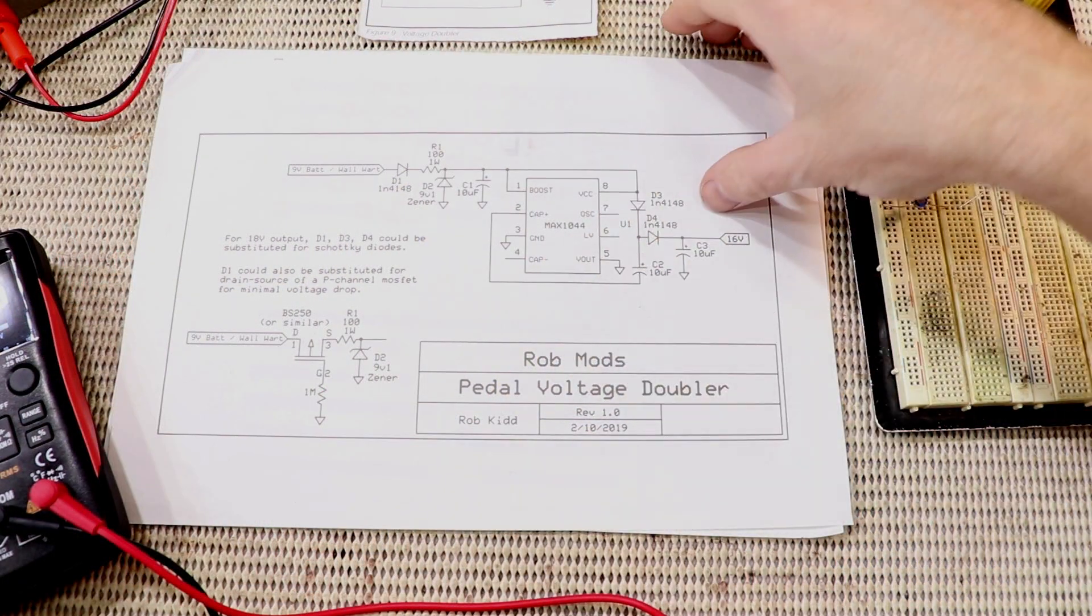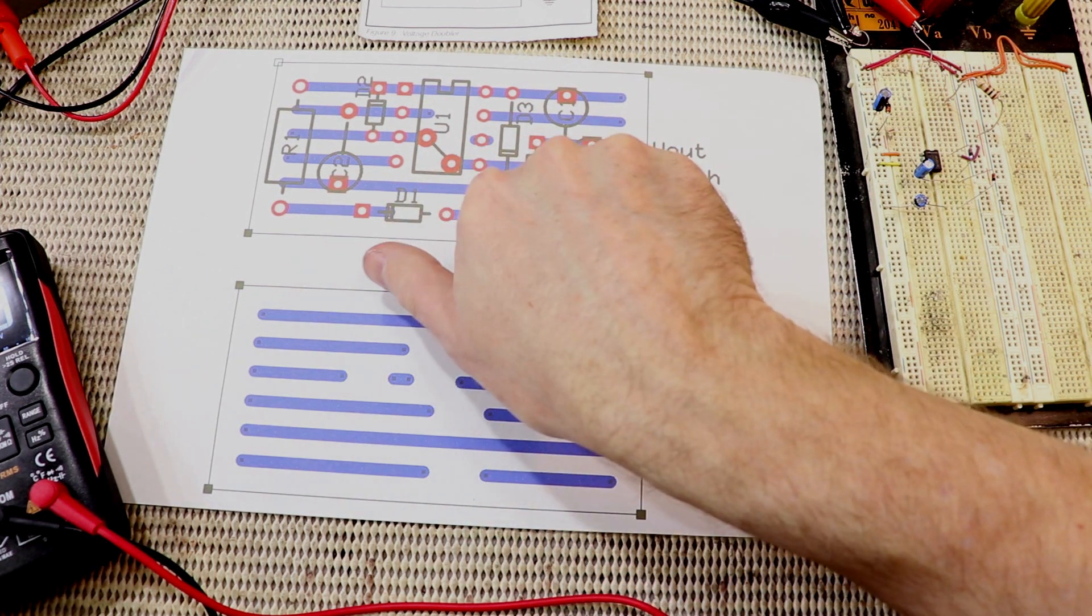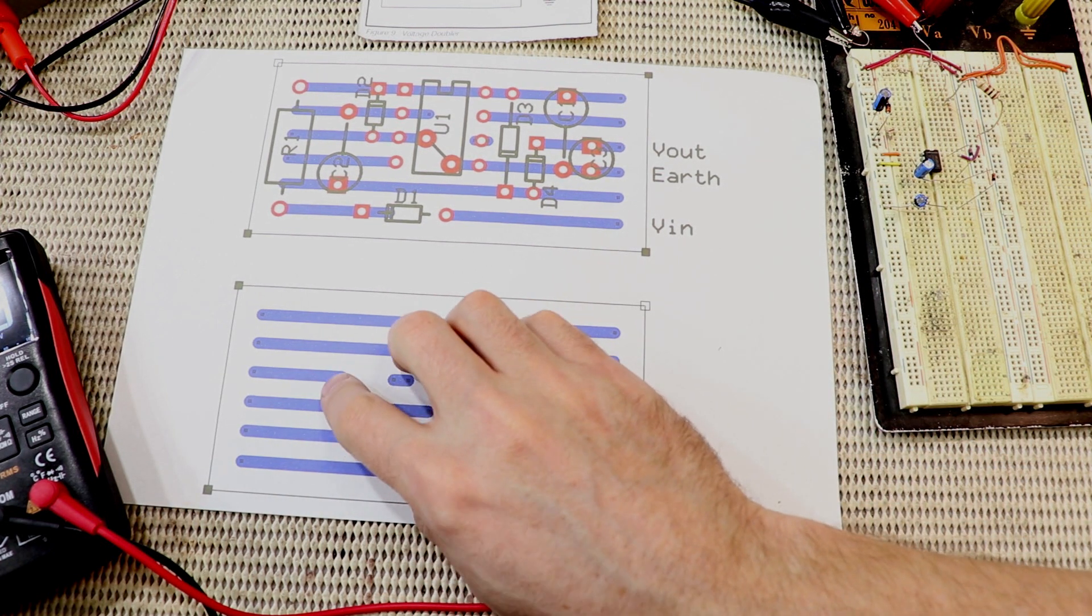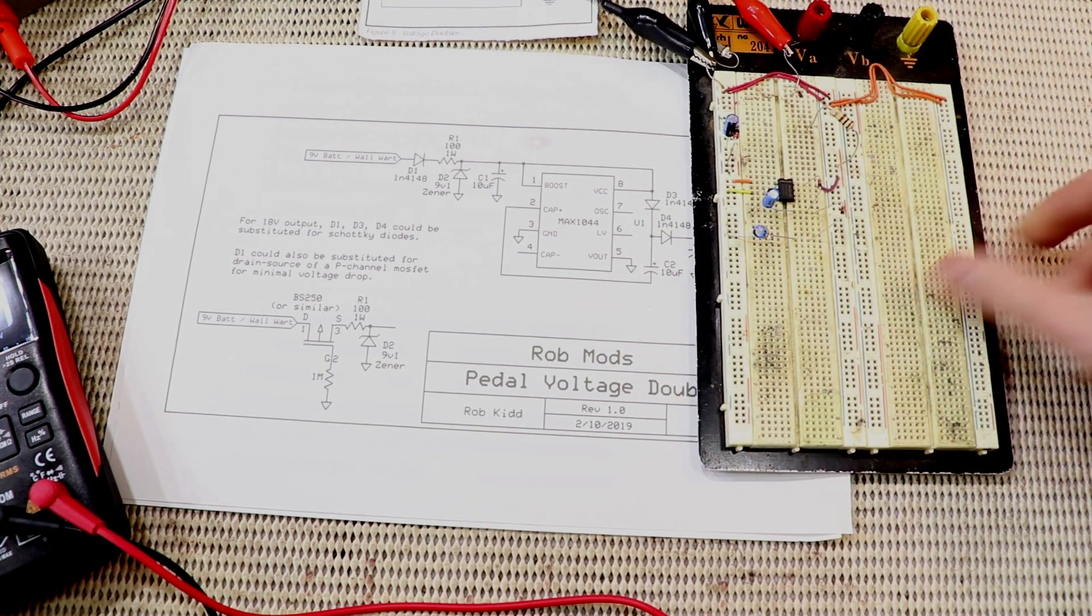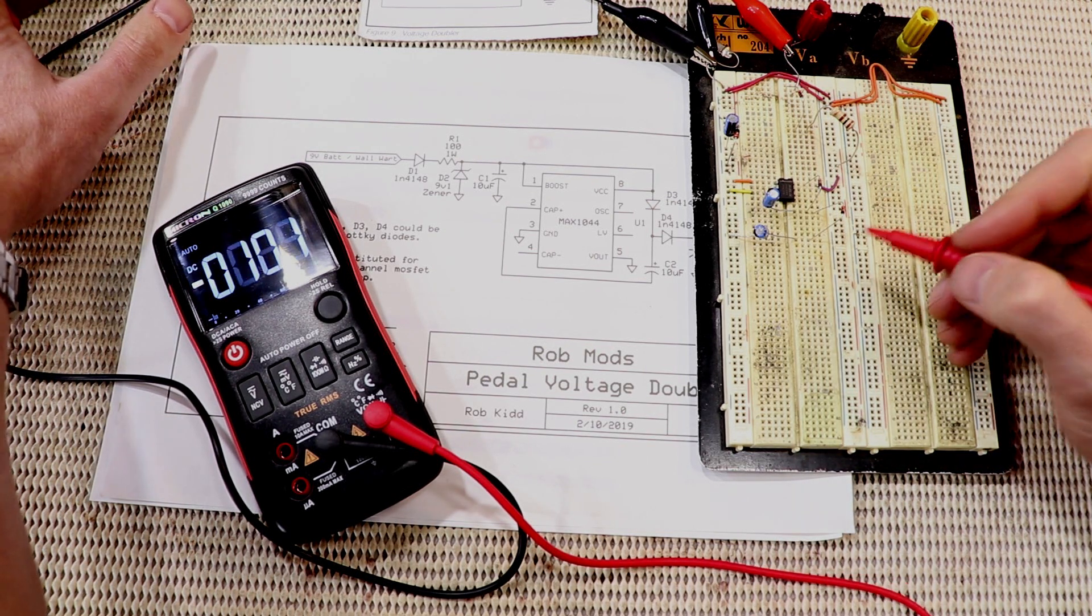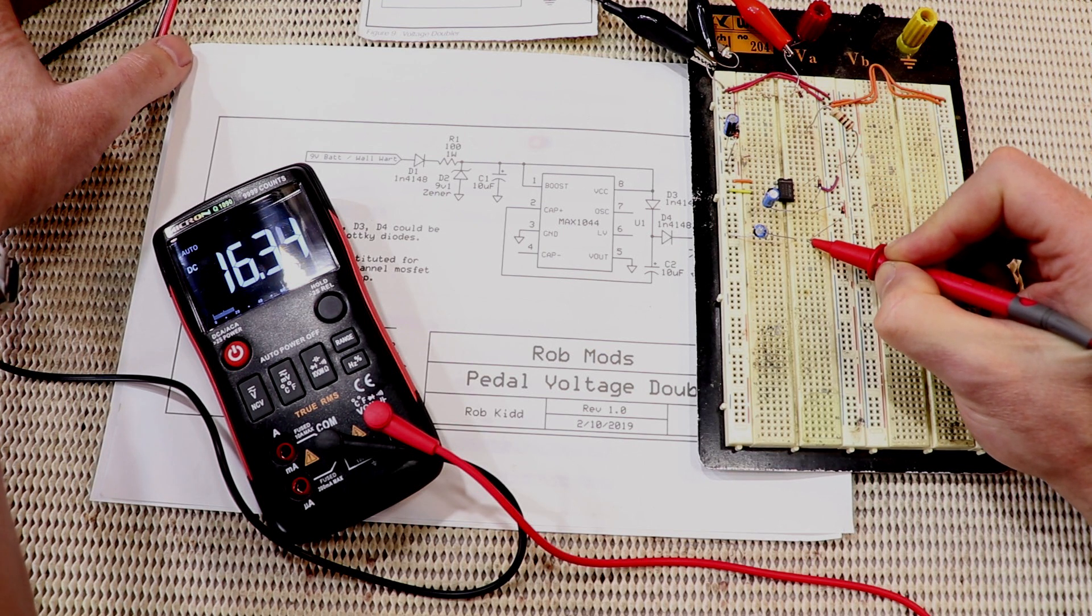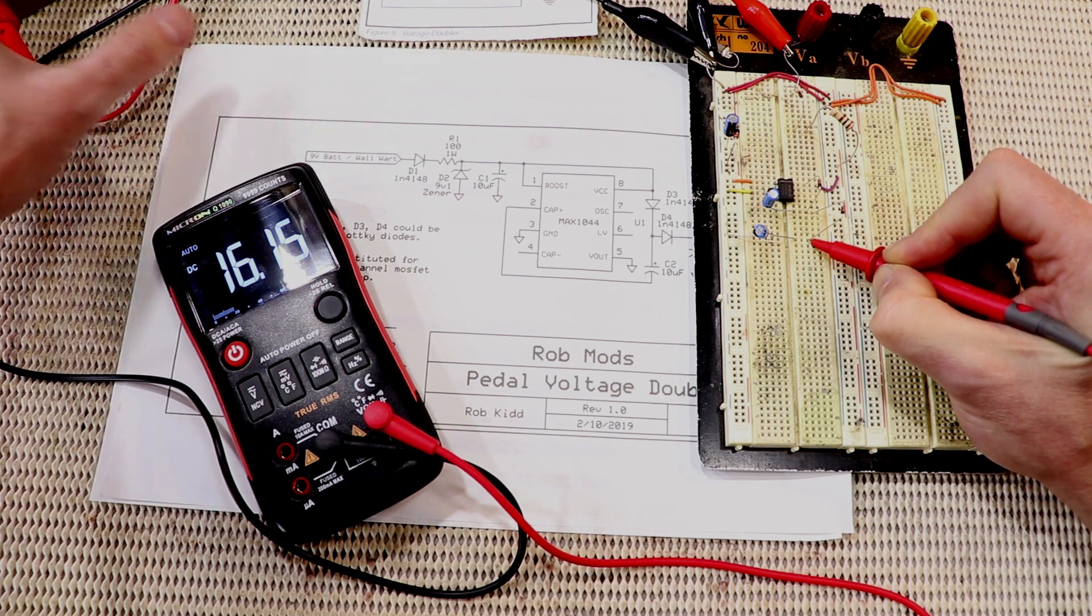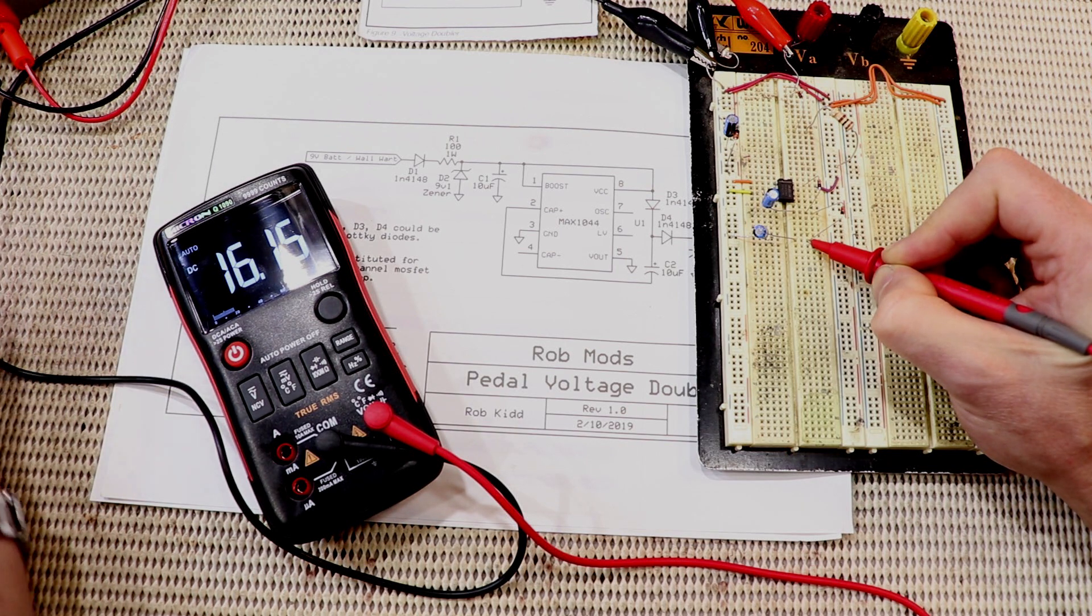So here's my finished circuit. I've also put together a little strip board layout it's about three centimeters by one and a half centimeters it's quite small. This is the reverse view or the bottom view of the tracks. I've got it also on the breadboard and I've got my 9 volt power supply hooked up or set to 9 volts I should say and the output is well it's only 16 volts. So what's happened to those two volts?